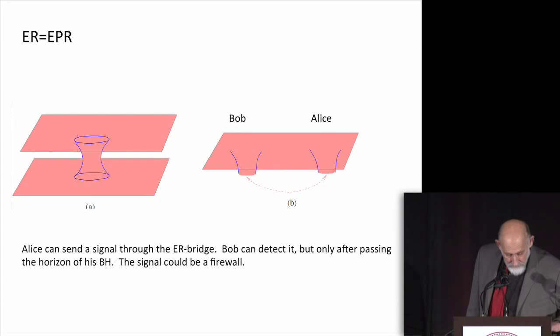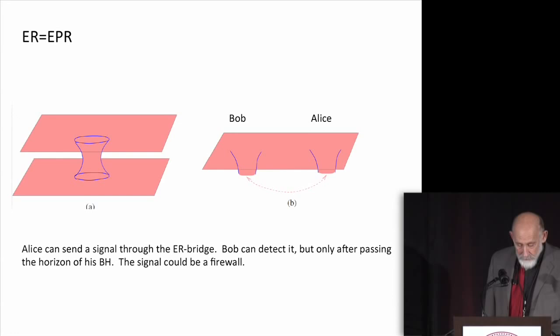Now let me come to the AMPS paradox, the paradox of firewalls, which I do think is a very deep and important paradox. I don't think the answer is what AMPS said, but I think the paradox is deep and important, and whatever the answer is, I think it's going to be something very, very deep. The problem that AMPS addressed is what happens when – how do you make this thing go to the next slide?